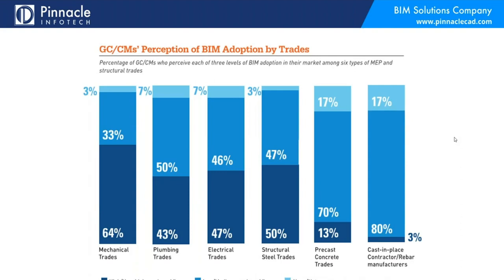We did the same thing with GCs, asking: in the markets you operate, when you want to bring on a trade, do you have trades that come ready to play BIM? Mechanical trades were the strongest — almost two-thirds report no problem. It drops off with plumbing and electrical, and surprisingly with structural too — only half said they had people readily available. It falls way off when you get to precast and cast-in-place — an area where the industry needs to help those contractors get better at using models.